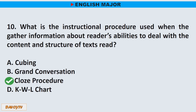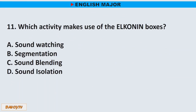Question number 11. Which activity makes use of the Elkonin boxes? A. Sound watching. B. Segmentation. C. Sound blending. D. Sound isolation. The correct answer is letter B. Segmentation.